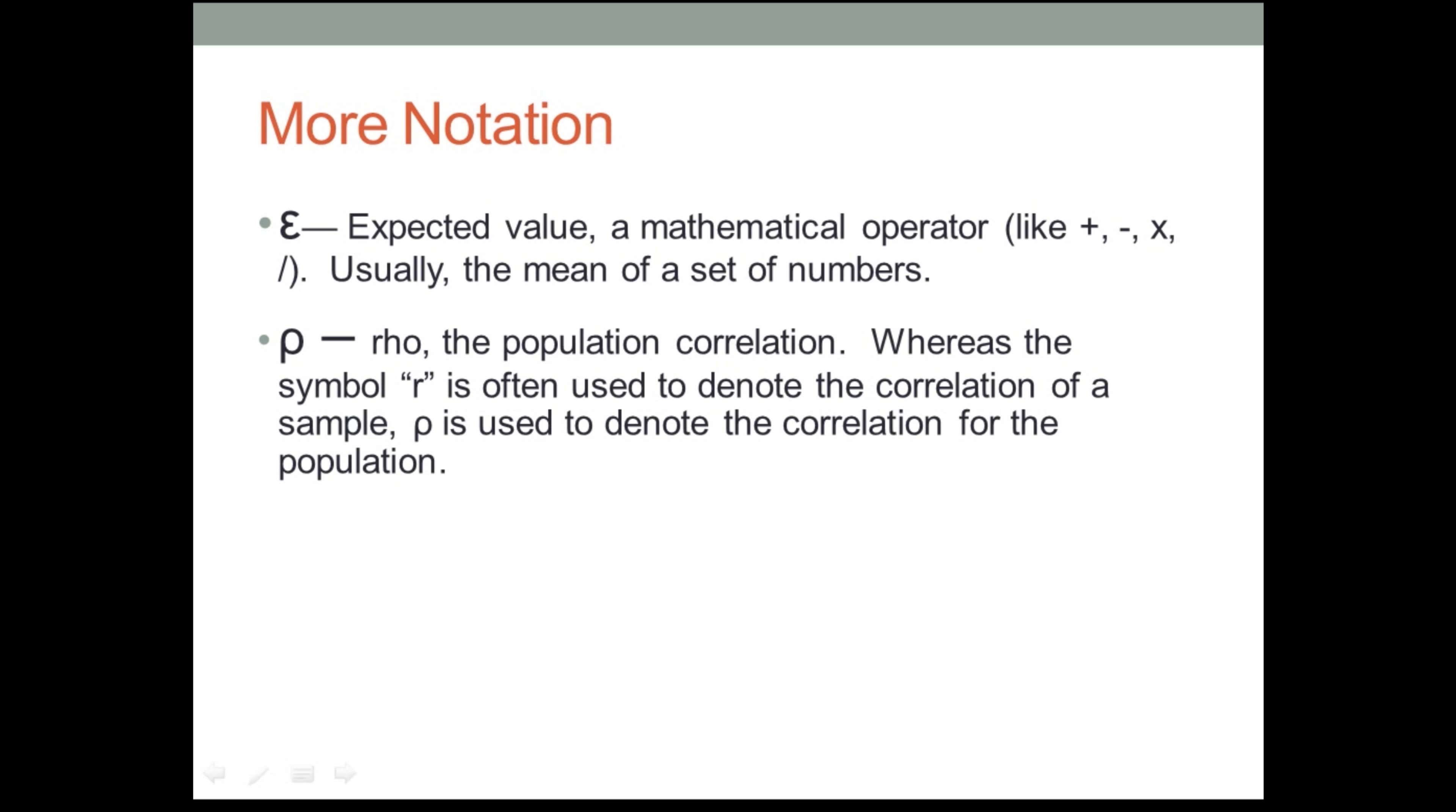I don't know if you remember, but R from your introductory statistics class, R was used to designate a Pearson product moment correlation of a sample. And rho is used to denote that very same correlation, but as it applies to the population, that is to everybody who we possibly might be able to measure.